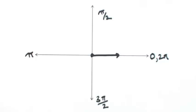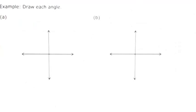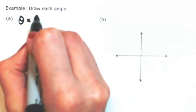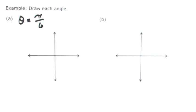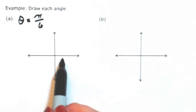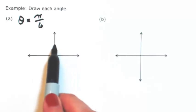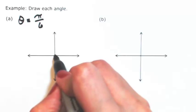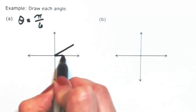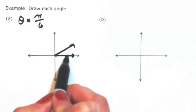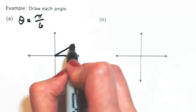So using this picture, let's do a few examples of drawing angles and radians. So let's draw each angle. Let's say that theta is pi over 6. Remember that half way is 1 full pi. A quarter of the way is a half of a pi. So a sixth of a pi is a lot smaller than that. So going basically a third of a quarter. So in other words, this is pi over 6.